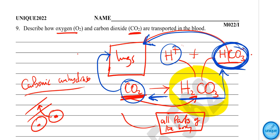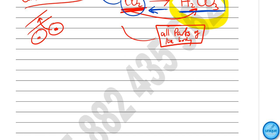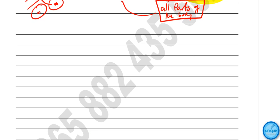That is the summary about how oxygen and carbon dioxide are transported in the blood. You can read more in your textbooks. If you enjoyed this video, please don't forget to subscribe to the channel and like the Facebook page, Unique Online Classes Malawi.